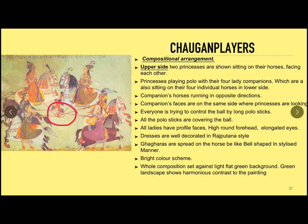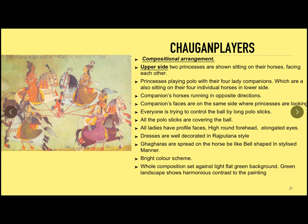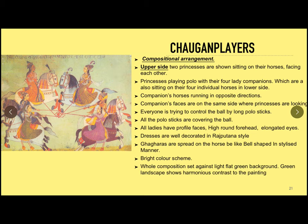Everyone is trying to control the ball with long polo sticks, and all the polo sticks are covering the ball. All the ladies have profile faces, high round foreheads, and elongated eyes. All the dresses are well decorated in the Rajputana style. The ladies' skirts or ghagra are spread in a bell shape over the back of the horses in a stylized manner. The artist has used a bright color scheme, with the whole composition set against a light green background. The ladies' bright dresses create a harmonious contrast against the green landscape. A bunch of sunflowers and leaves can be noticed in the foreground.